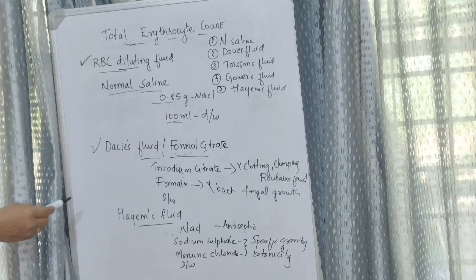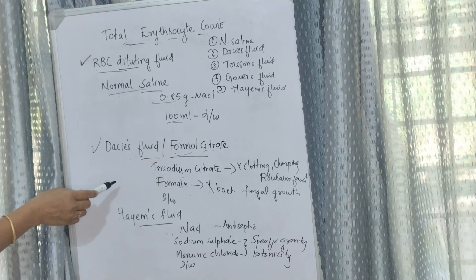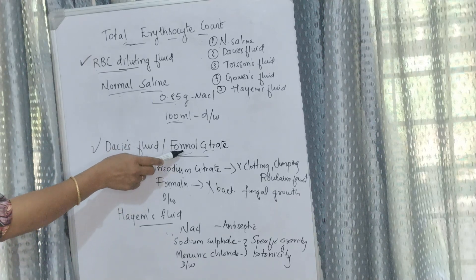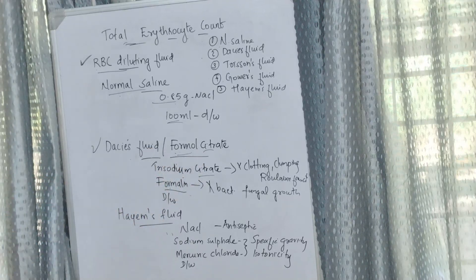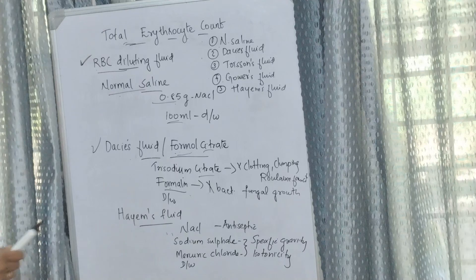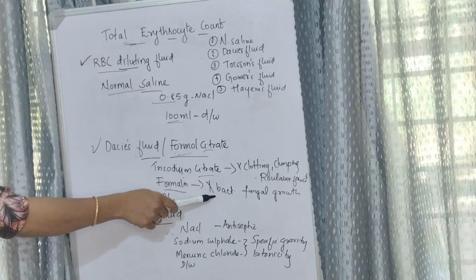Dacie's fluid or formal citrate: Dacie's fluid is also called formal citrate as it contains trisodium citrate and formalin. Trisodium citrate prevents clotting, clumping, and rouleaux formation, while formalin prevents bacterial and fungal growth.